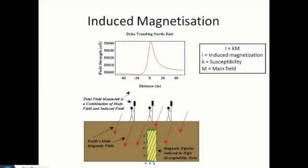The induced magnetization in a body is equal to the susceptibility of the body multiplied by the main field. So this main field coming in induces the magnetic anomaly.